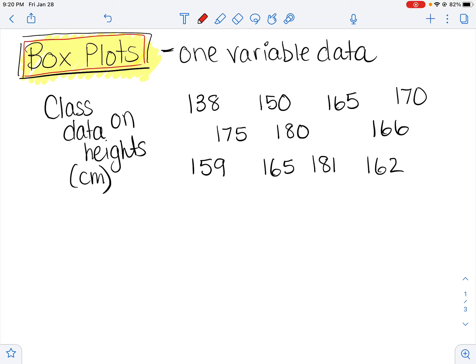A video on box plots. So this is a type of way that we could display one variable data. One variable meaning we're comparing one thing. For example, let's say we wanted to look at the heights of different people in our class. So we could survey the heights of everyone in the class.